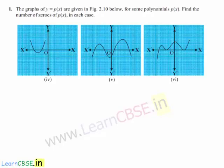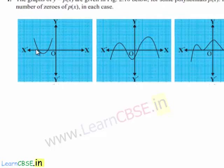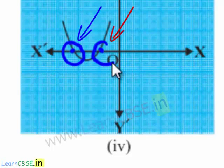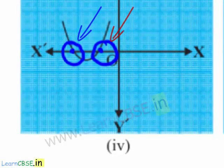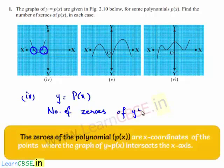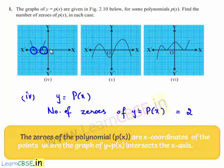Now coming to the fourth case, the graph y equal to p of x is intersecting the x-axis at two points — this is one point and this is another. Therefore, the number of zeros of p of x is two, as it is intersecting the x-axis at two points.